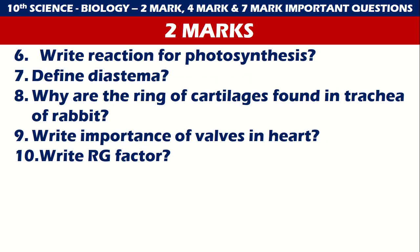Write the reaction for photosynthesis. Define diastema. Why are rings of cartilage found in the trachea of rabbit? Write the importance of valves in the heart. Write the RQ factor. These are five important questions.